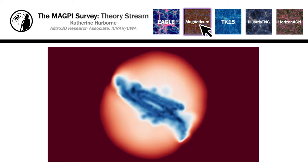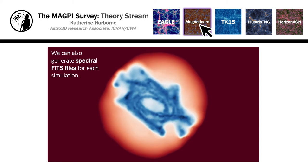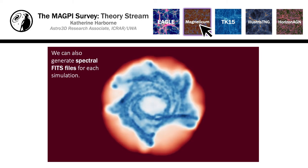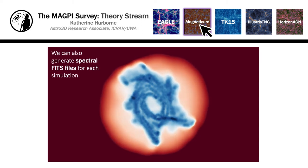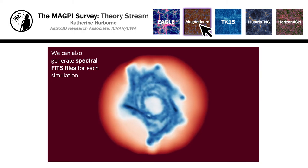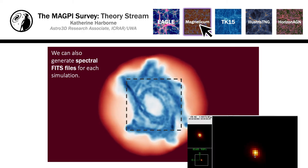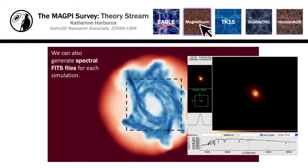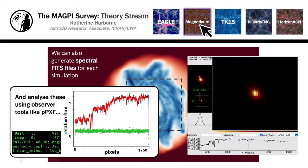Finally, we can use SIMSPIN to produce full spectral cubes in FITS format, which can be used with our observational pipelines — for example, fitting the kinematics with PPXF.